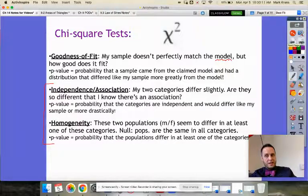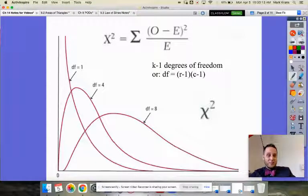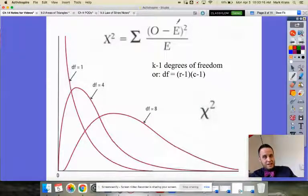All the time, we're going to be calculating the same test statistic. This chi-squared test statistic is the sum of the observed value, which is just how many we observed minus the expected value, which is calculated a couple of different ways, squared divided by the expected.